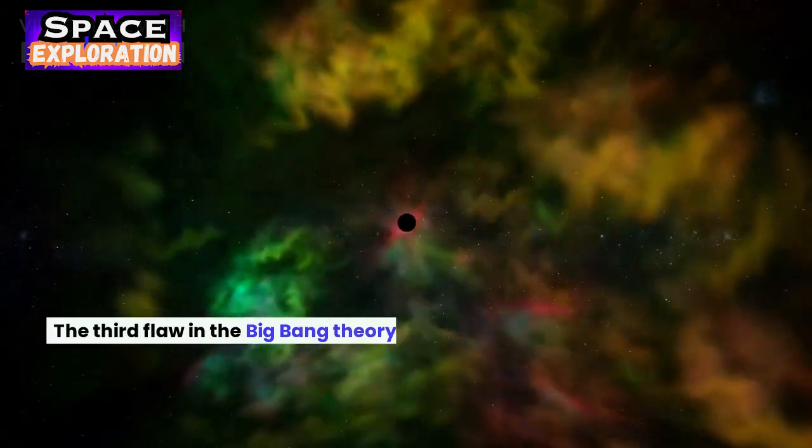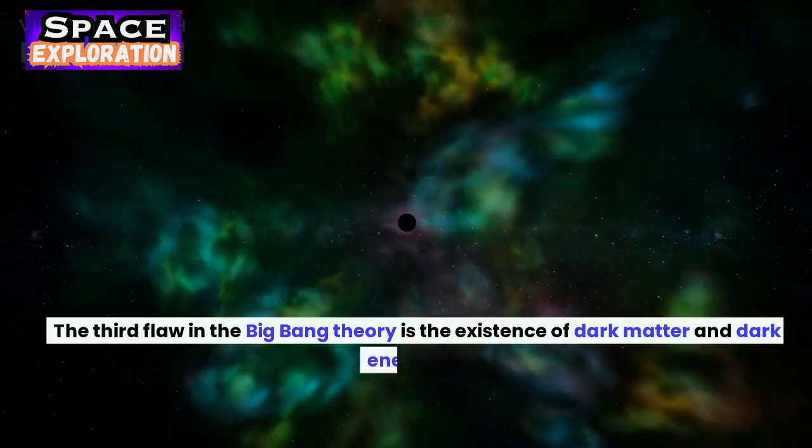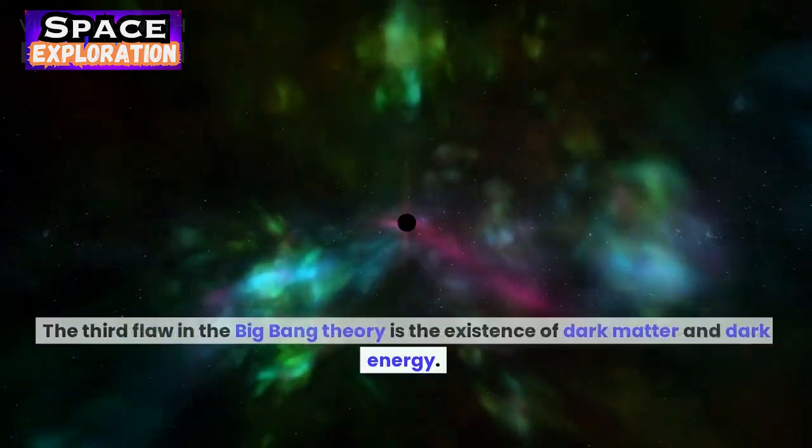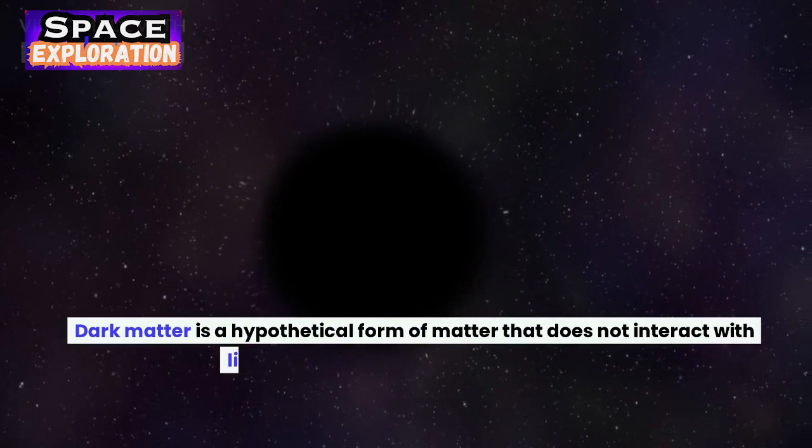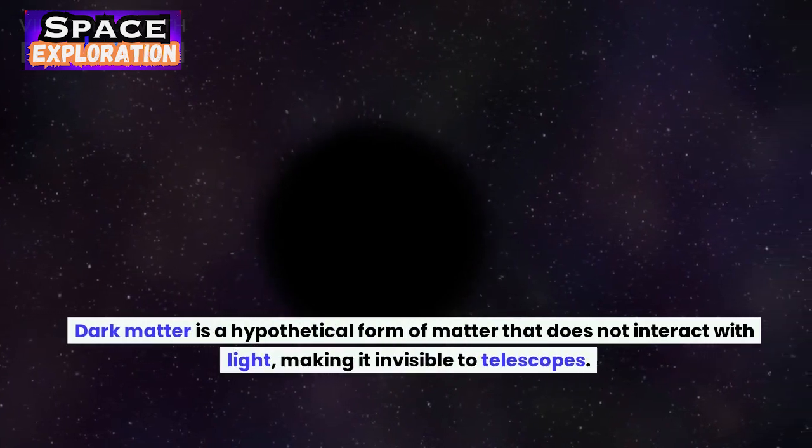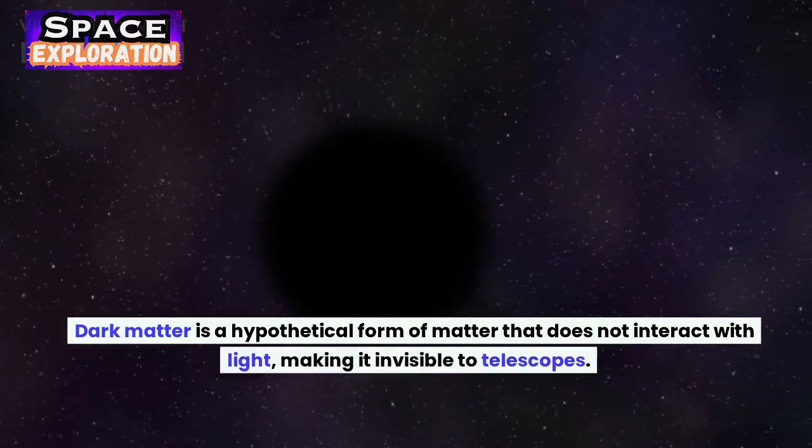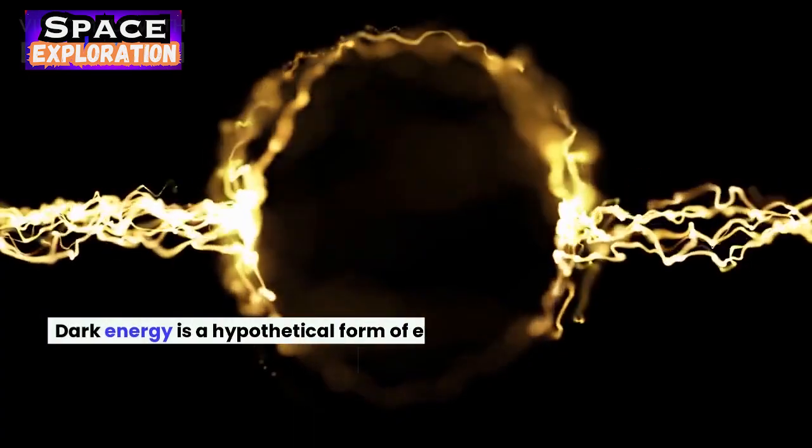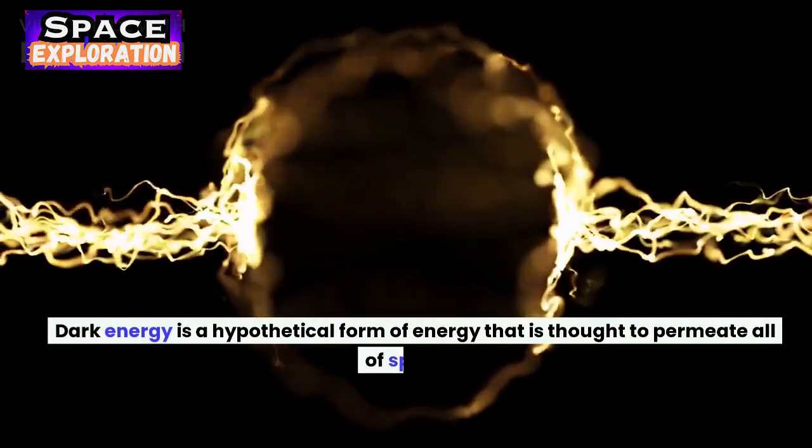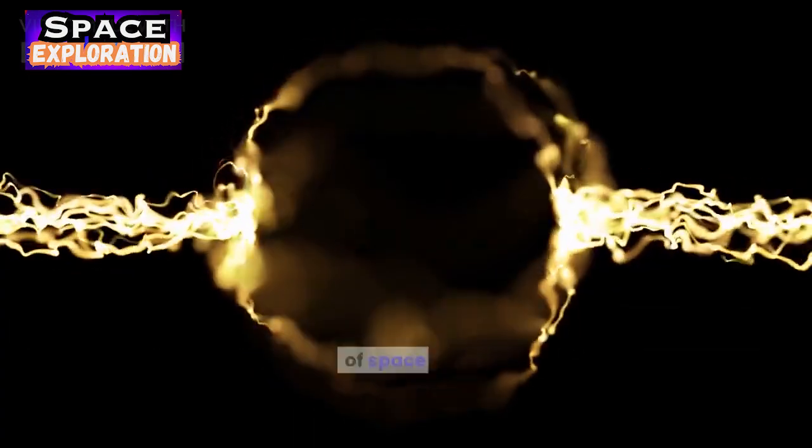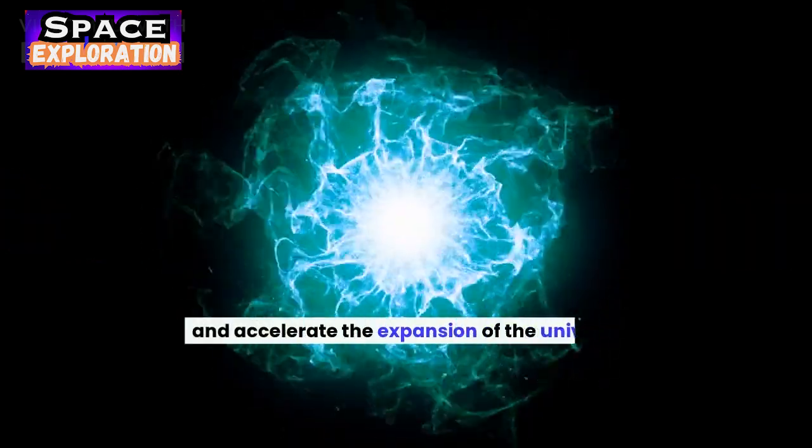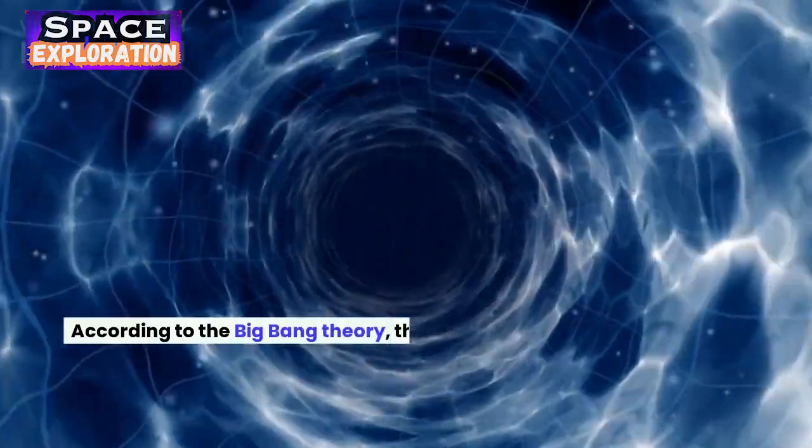The third flaw in the Big Bang Theory is the existence of dark matter and dark energy. Dark matter is a hypothetical form of matter that does not interact with light, making it invisible to telescopes. Dark energy is a hypothetical form of energy that is thought to permeate all of space and accelerate the expansion of the universe.